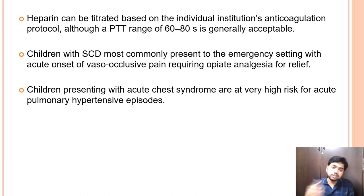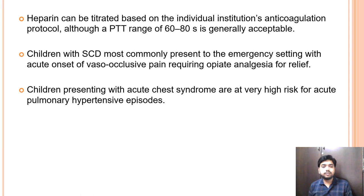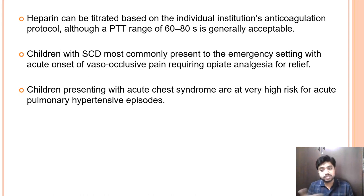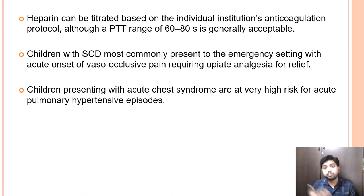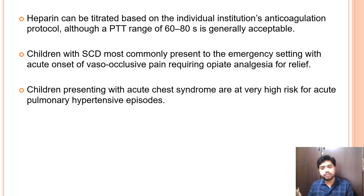Sickle cell disease children can present to emergency with acute chest pain and vaso-occlusive pain crisis. They may need opiate analgesics for relief and hyperhydration with boluses of 20 ml/kg.